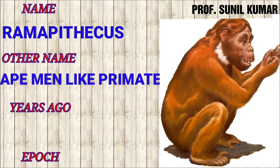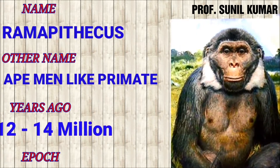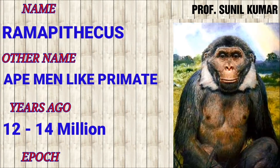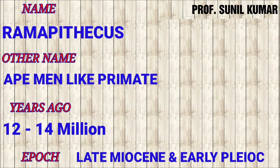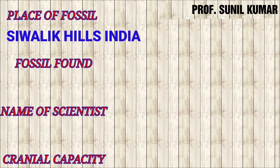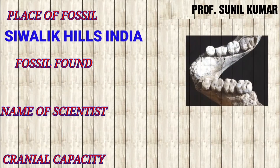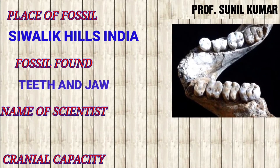The third stage is Ramapithecus, also called ape-men like primates — they were apes but showed some primitive man-like structures. They lived around 12 to 14 million years ago in the late Miocene and early Pliocene epoch. The fossil was found in the Sivalik Hills, India, and consisted of the teeth and jaw — basically the lower jaw.